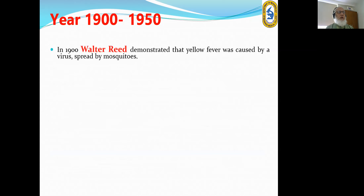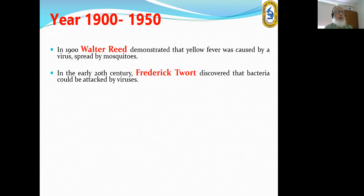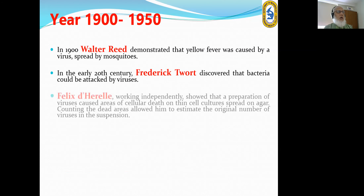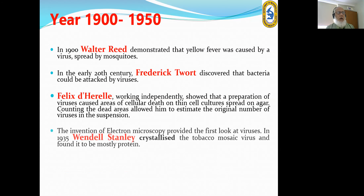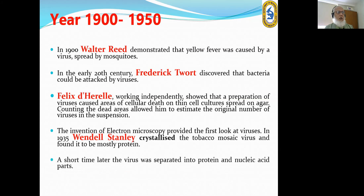During the period 1900 to 1950: In 1900, Walter Reed demonstrated that yellow fever was caused by a virus and spread by mosquitoes. In the early 20th century, Frederick Twort discovered that bacteria could be attacked by viruses — bacteriophages — and Felix D'Herelle working independently showed that preparations of viruses caused areas of cellular death on thin cell cultures spread on agar, allowing counting of virus numbers. The invention of electron microscopy provided the first look at viruses, and in 1935 Wendell Stanley crystallized tobacco mosaic virus and found it to be mostly protein. Shortly later, the virus was separated into protein and nucleic acid.